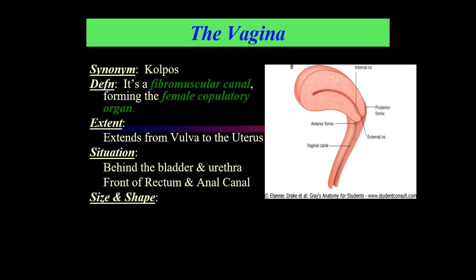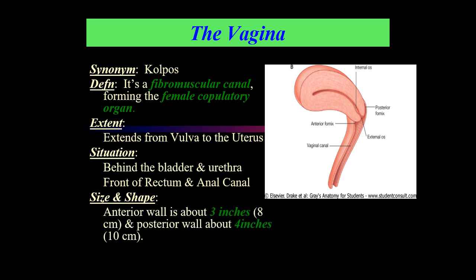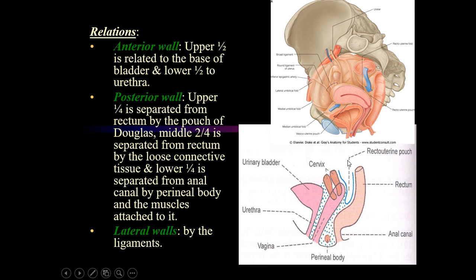Looking at the size and shape, the vagina has two walls: the anterior wall and the posterior wall. The anterior wall is shorter, measuring approximately 7.5 cm or 3 inches. The posterior wall is longer at 4 inches or 10 cm. So the anterior wall is 1 inch shorter compared to the posterior wall.